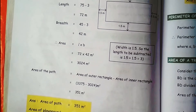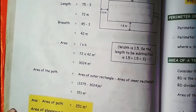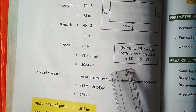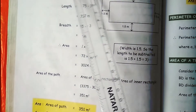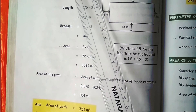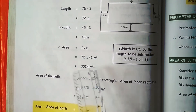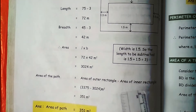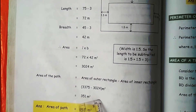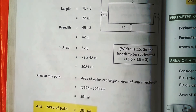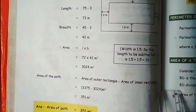Now they are asking us to find the area of the path. Area of outer rectangle minus area of inner rectangle gives us the area of the path: 3375 minus 3024 equals 351 square metres. So the total area of the playground is 3375 square metres and the area of the path is 351 square metres.